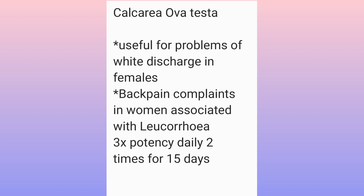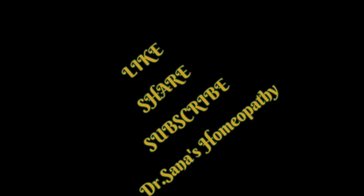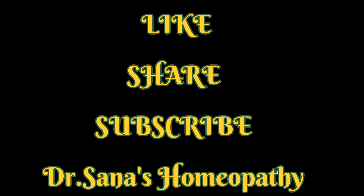The last drug is Thuja, a very effective medicine for dissolving ovarian cysts, especially on the left side. It is used for treatment of retarded menstrual flow. Thuja can be given in 1M potency or 30 potency, two drops every three days for one month.